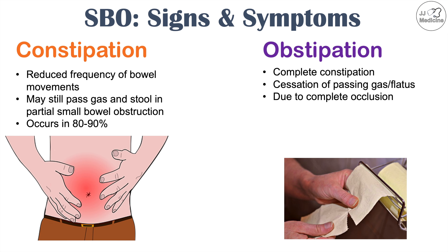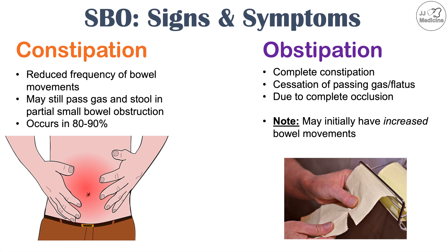In the context of abdominal pain, nausea, and vomiting, if you see obstipation — cessation of passing gas and cessation of bowel movements — this is where we really start to think this is a small bowel obstruction. It's important to note that in both constipation and obstipation, there may be an initial increase in bowel movement frequency as the obstruction begins, but then bowel movements slow and may stop completely, with cessation of passing gas as well.